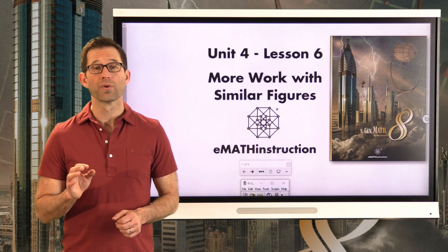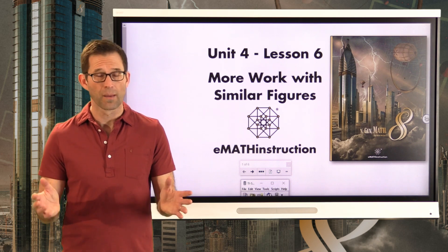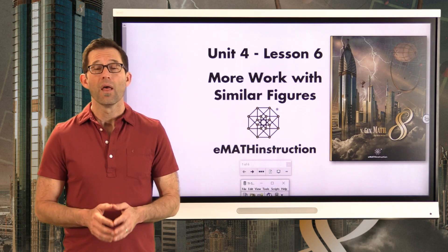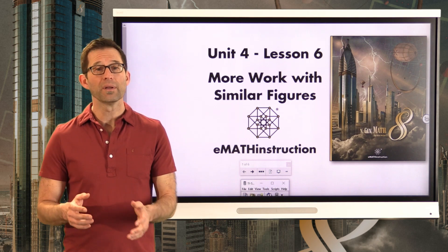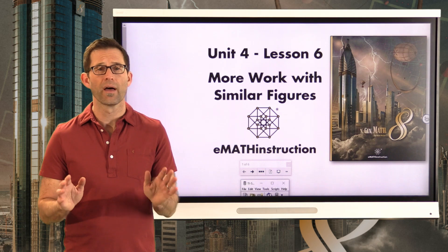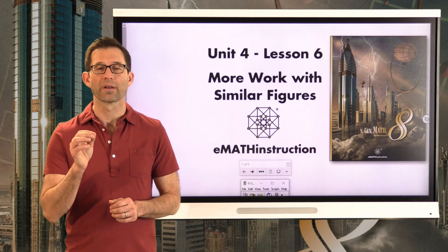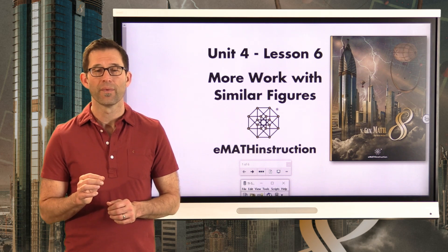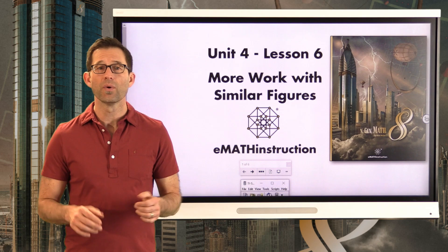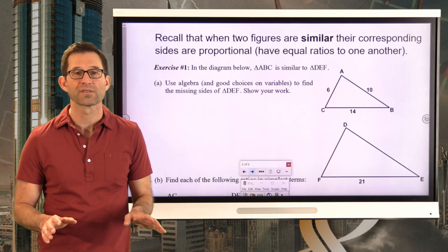In the last lesson we introduced the idea of similar figures — this idea that if you take something like a triangle and you do a dilation on it, then what will happen is you'll produce another triangle whose lengths have all been scaled according to the dilation constant, but whose angles are exactly the same. We're going to work with that idea more today, and let's get right into exercise number one where we review some very important facts.